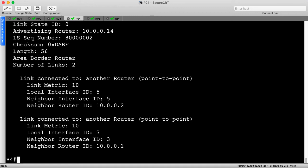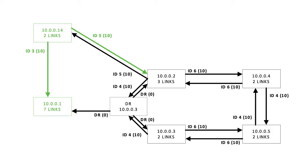So we've completed the entire graph with the exception of R1. Let's update our diagram: R14 has router ID 10.0.0.14 and two point-to-point links — one with ID 5 to R2 and one with ID 3 to R1. Both costs are 10, so it doesn't appear to be any misconfiguration there. The last node we need to look at is R1, and as you can probably guess, this is where we're going to find our bug. So let's dive into that next.